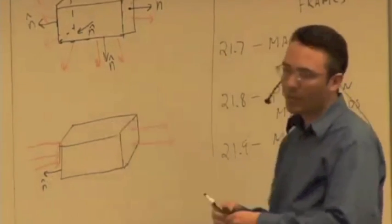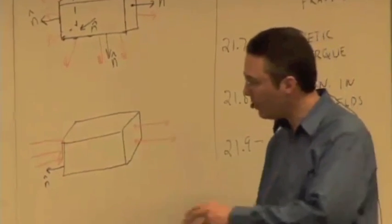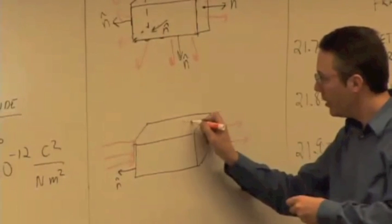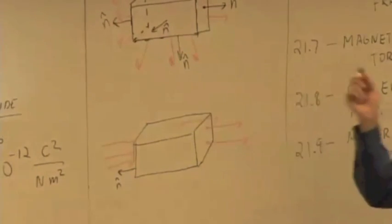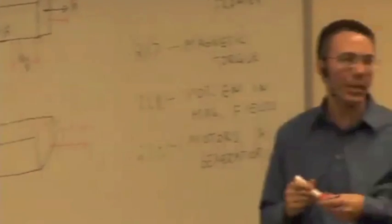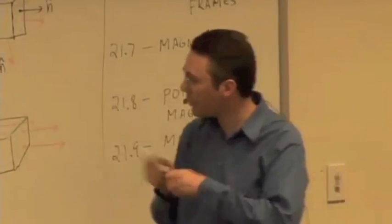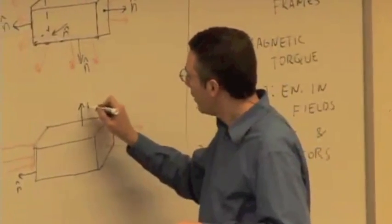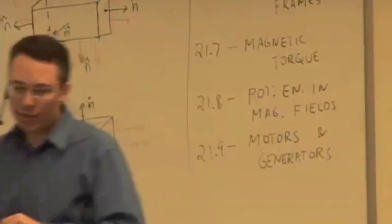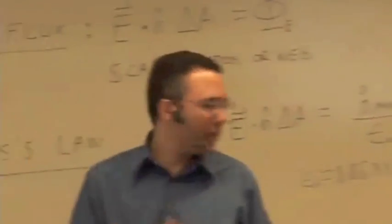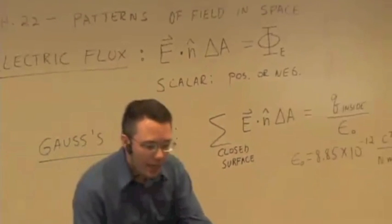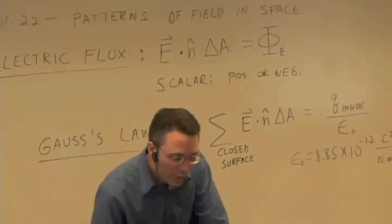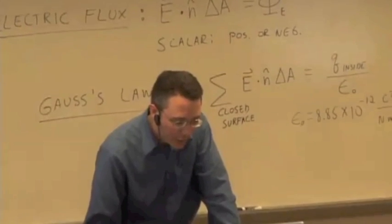What was the flux on the top? Flux on the top was zero because what was the angle between the electric field and N hat on the top? It would be cosine 90, which gives you zero. So we see how this works. And this summation of all these fluxes over the surface is going to give us some idea of what charge is inside. Let's see if we can try a quick example.